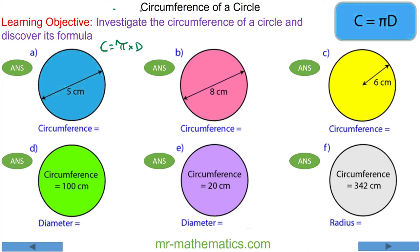We begin with question a, where the diameter is 5 centimeters, so the circumference is pi times 5. If you don't have the pi button, you could use 3.142 as an approximation, but in this case, pi times 5 works out as 15.7 centimeters.